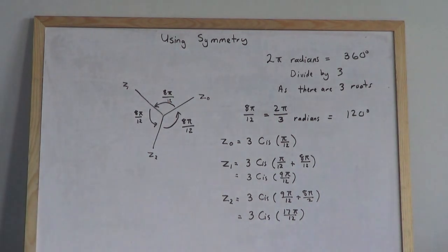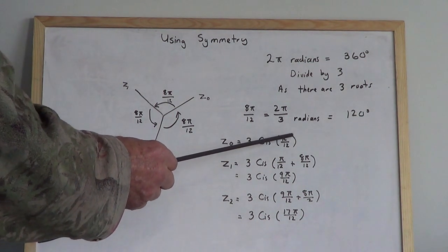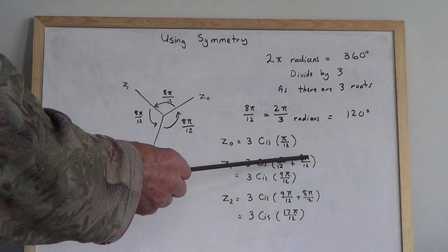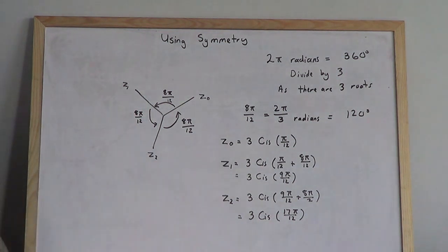So we just move these angles around. Here's the calculation: there's z₁. We start at π/12 and add another 8π/12, and we get 9π/12. That's z₁. Then we take 9π/12 and add another 8π...